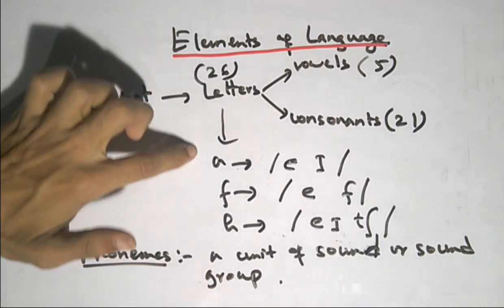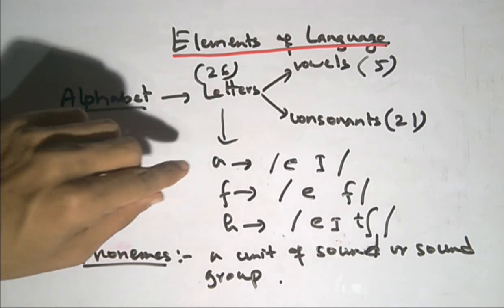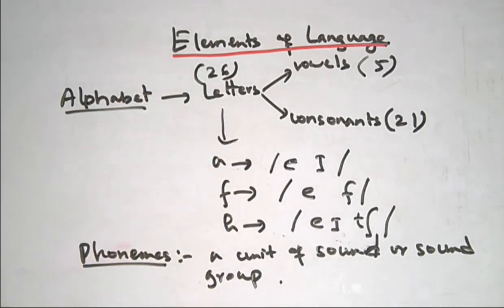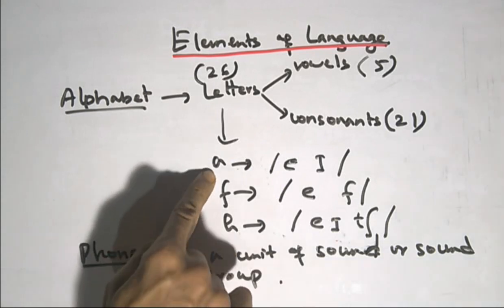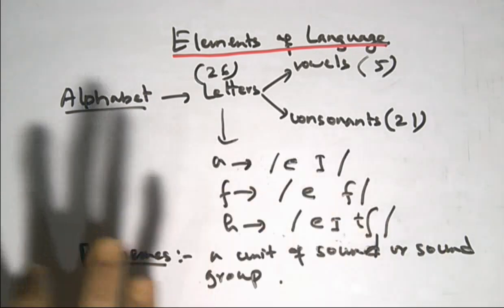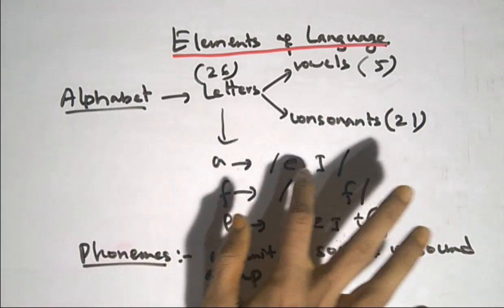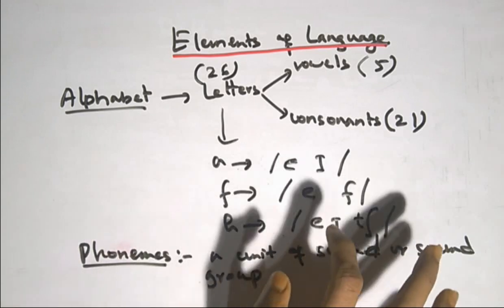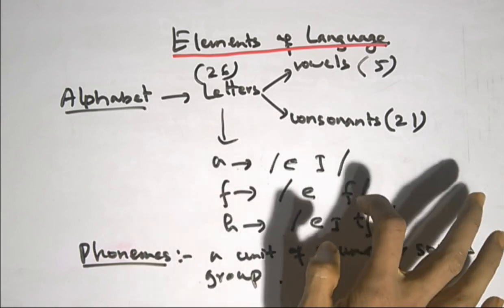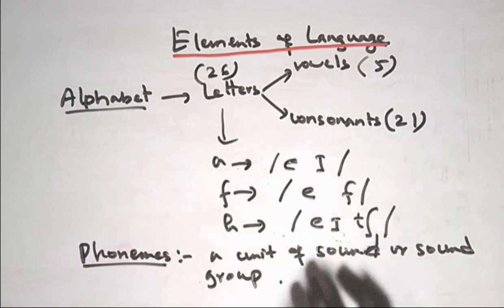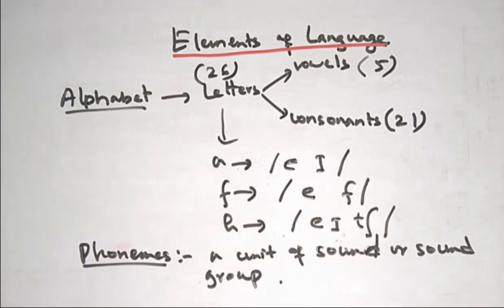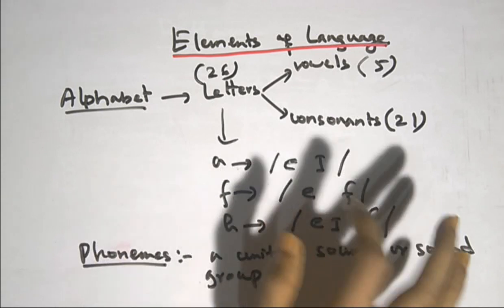I am going to tell you about a letter. For example, A, B, C, D. This letter is a letter — this is the correct pronunciation. This is A. A has a sound. F has a sound. H has a sound. The letters represent sounds.